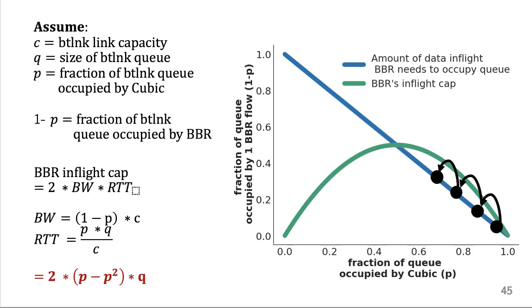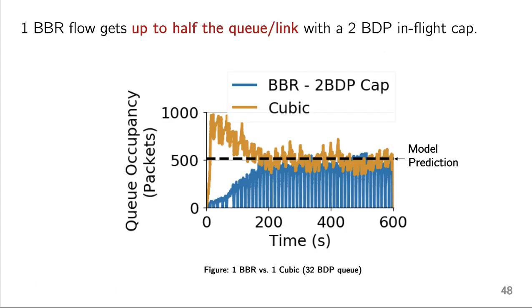So again, going back to our previous example, we can move up this blue line. But eventually, the amount of data in-flight equals BBR's in-flight cap. So it can't put any more data in-flight. And that happens to be when BBR has half of the Q. So one BBR flow can get up to half of the Q in the link when there's a 2 BDP in-flight cap. And our model prediction then is it can get half of the Q, which is shown here as this black dashed line. And we see in our empirical results, this is confirmed. We see that BBR gets about half of the Q here.